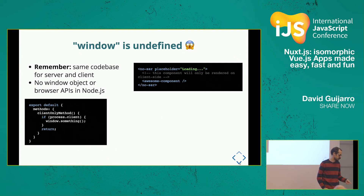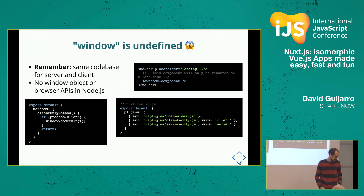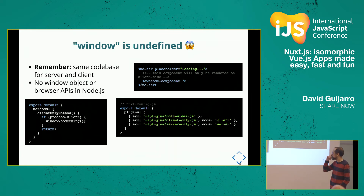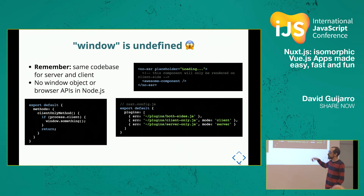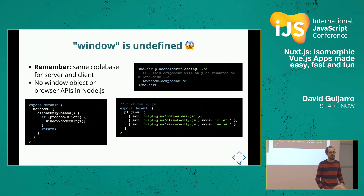If we are using a plugin that depends on the window object — maybe someone is using a carousel or something like that — we can define when adding the plugin to the `nuxt.config.js` file whether the plugin should work in both environments, only on the client, or only on the server.